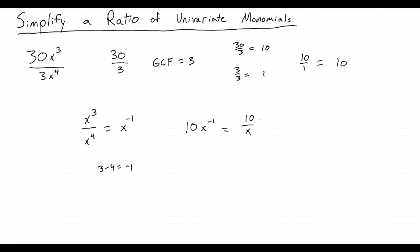So a ratio of univariate monomials is a fraction with only one variable, and to simplify it, you first deal with the integers and then with the variable. Right. Okay.